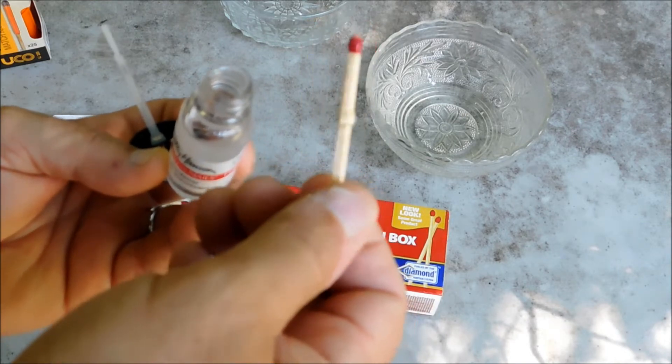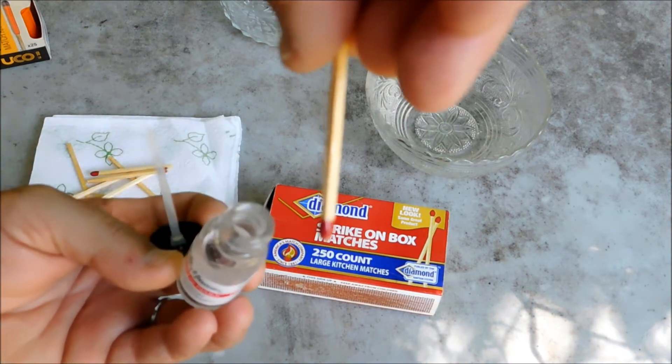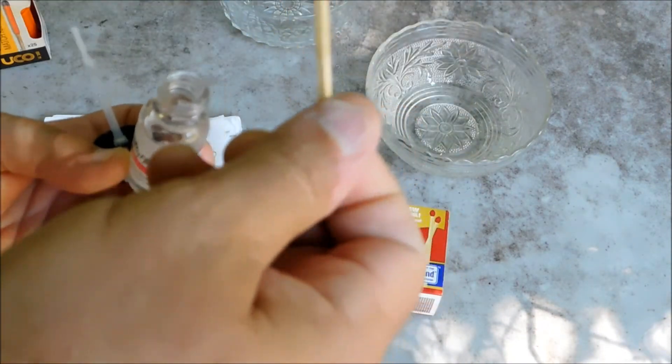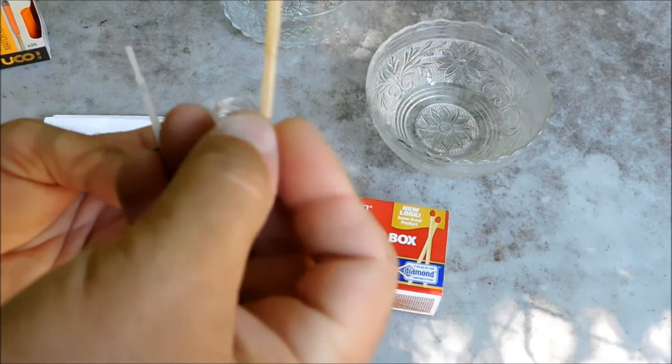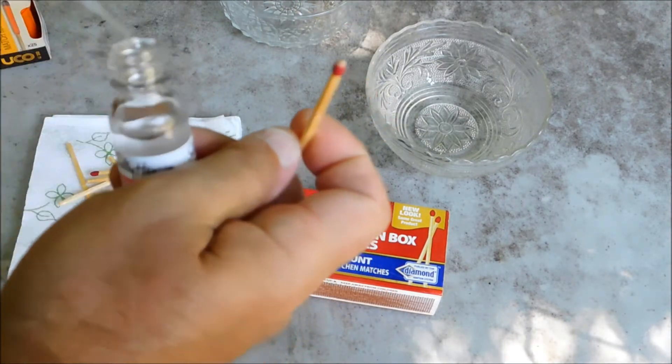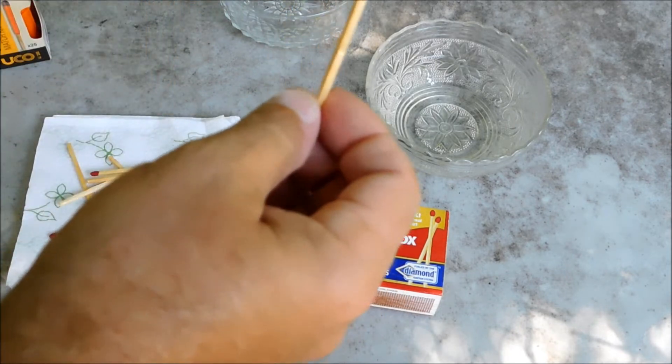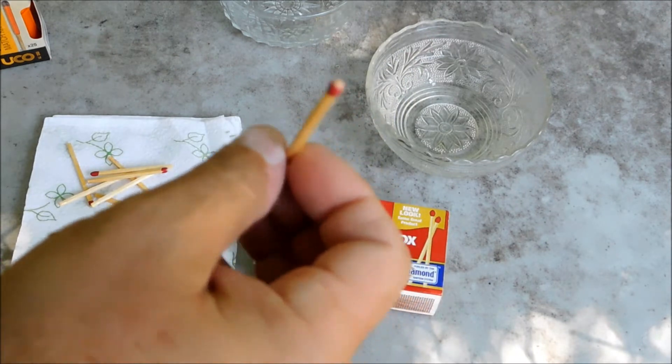You let that fingernail polish run down that piece of wood, run down the match, and then you turn it back over and let it run back down. You just sit there and twist a little bit until that fingernail polish spreads itself out real nice. Just let gravity do its work. That's how I made these. It was one dip, and we're going to be talking about this in some future videos.